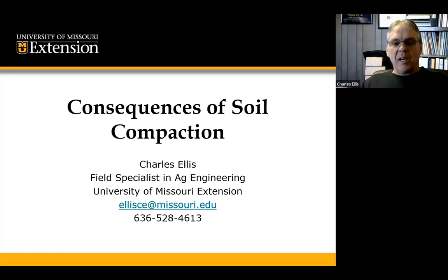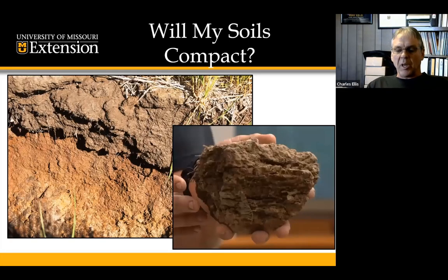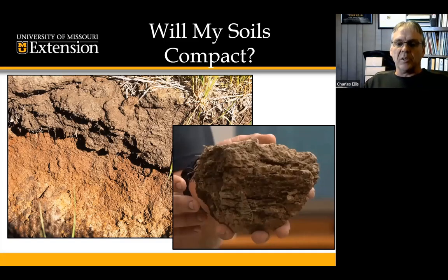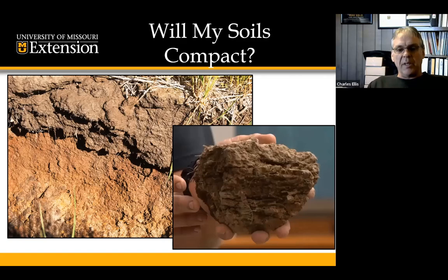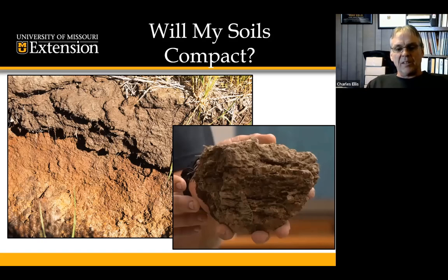When we talk about soil compaction, we're working with producers in Extension. When they have questions about crop production, they want answers of when I make a change, will it make a change in my production practices? They're looking for changes that will affect yield. An example of that would be adding irrigation to a crop field — we'll get an increase in yield. But when we get to an issue like soil compaction and they ask what the effect is, then we get into that area of mights and maybes.